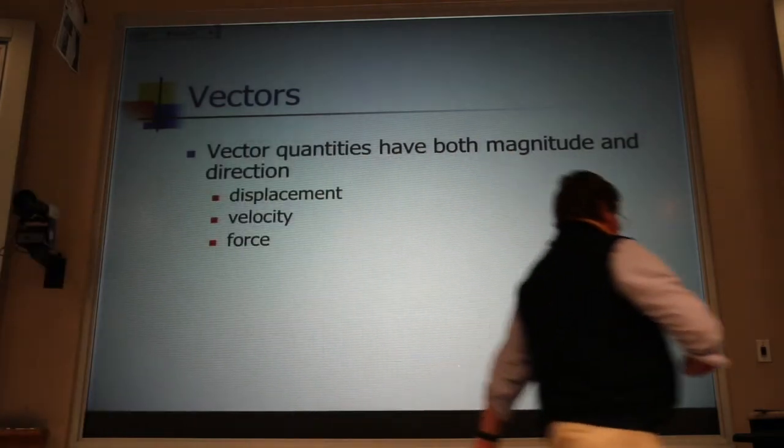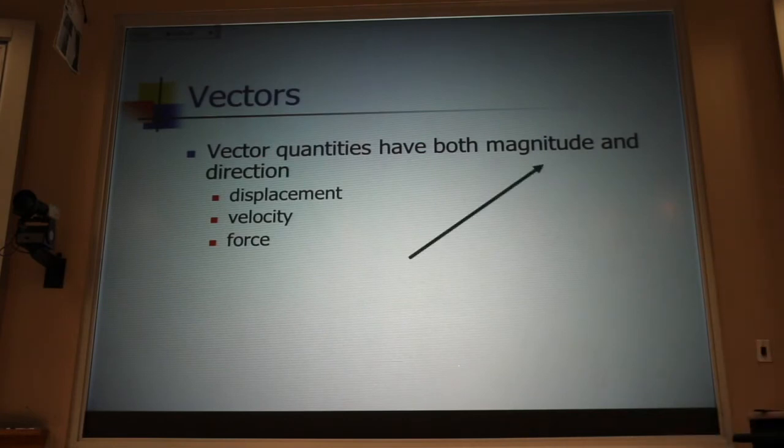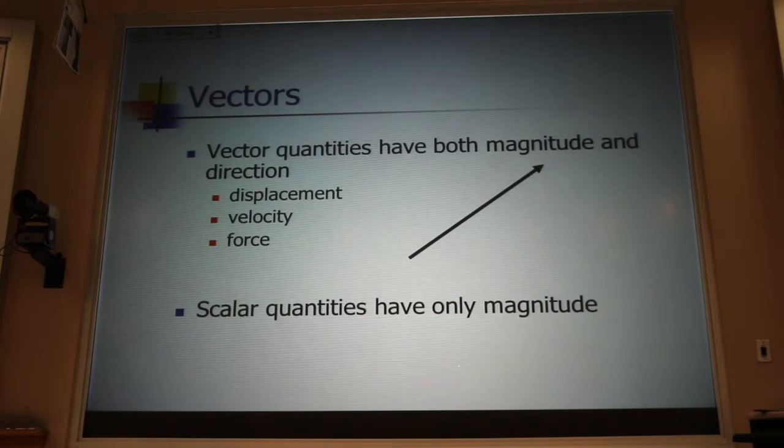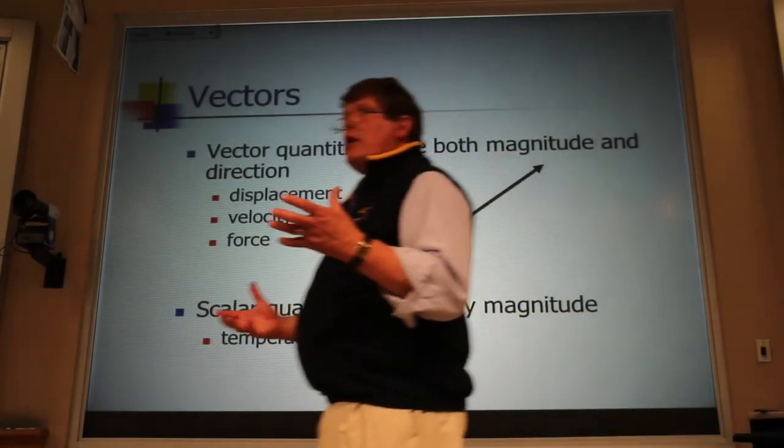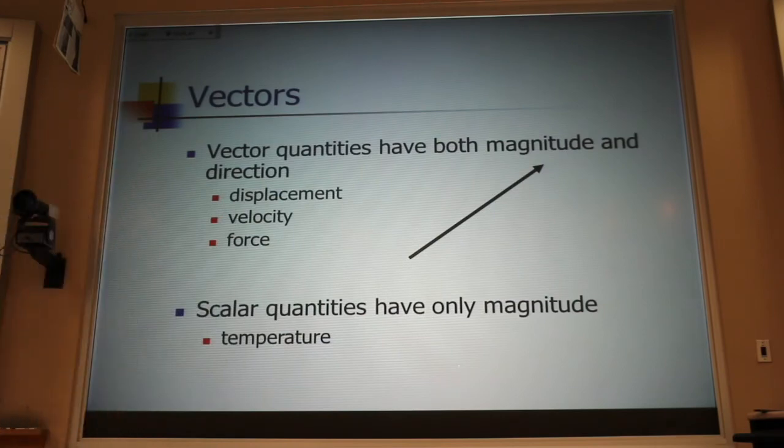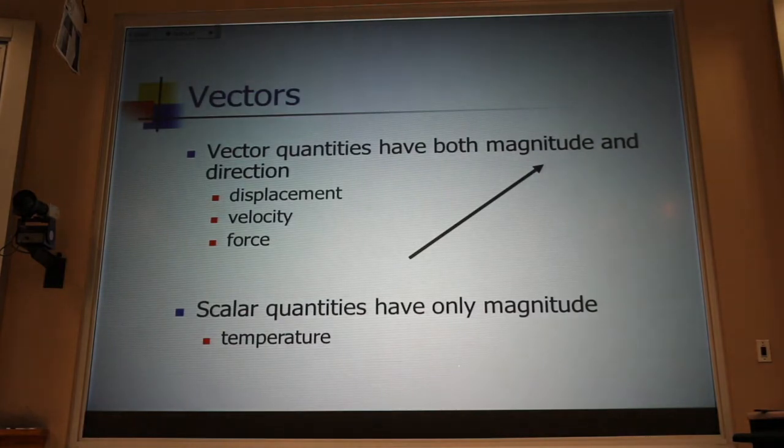We represent vectors, strangely enough, with an arrow. There are other quantities, like temperature, that don't depend on direction. When you say it's 30 below, you don't have to say it's 30 below east or 30 below west. It's just cold. You go outside and your nose hurts. It's a scalar quantity.